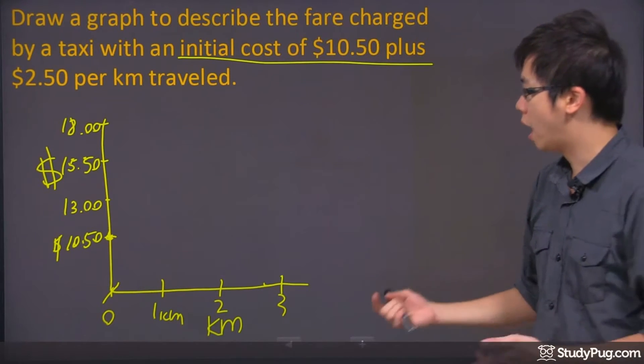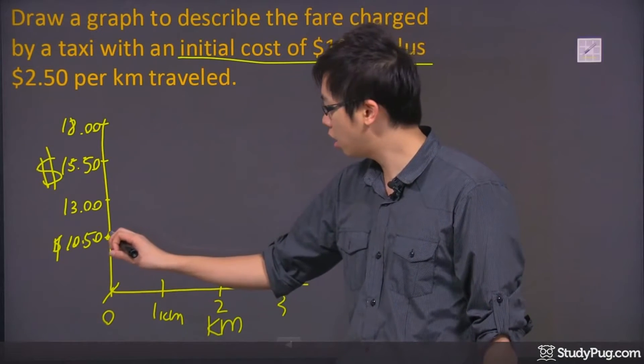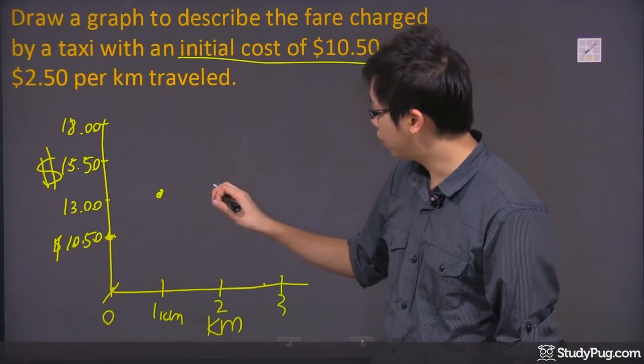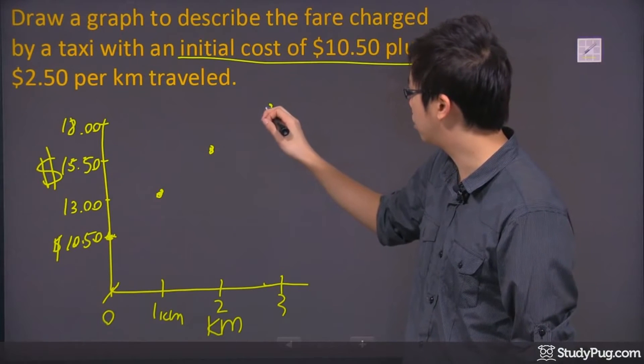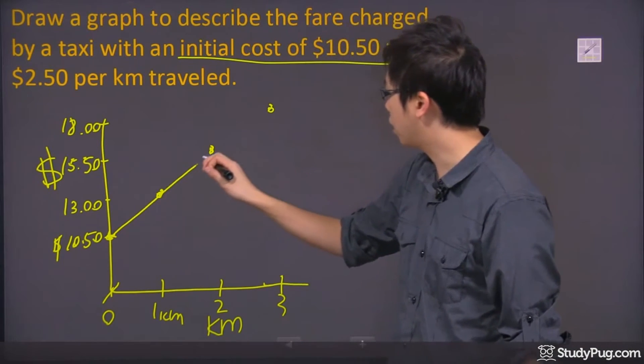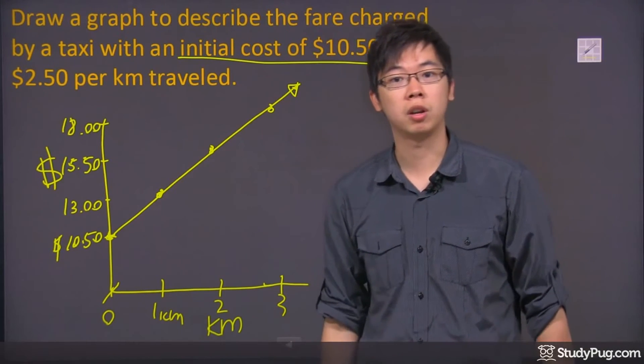So what happened is for every kilometer you travel, starting from here actually, every kilometer you travel, you have to pay another $2.50. Another kilometer over, you pay another $2.50. Another kilometer over, you pay another $2.50 right there. So guess what happened? You actually have a straight line coming up this way and that may go on infinity depending on how far you have driven.